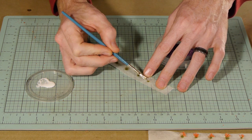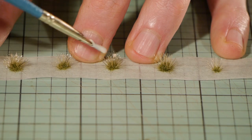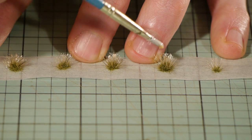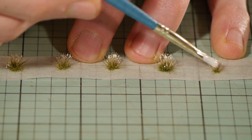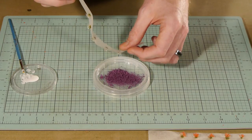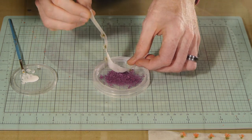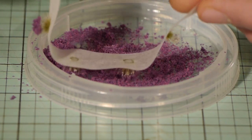I brush some undiluted PVA wood glue straight onto the longer grass fibers which are standing out from the smaller ones. Then simply dip the tips into the colored foam, shake off the excess and you're done.